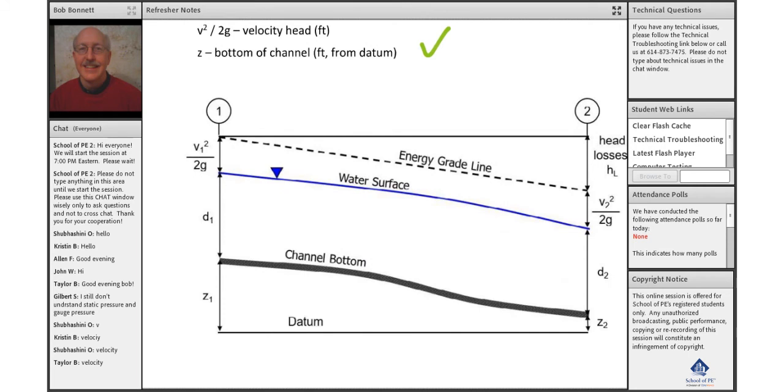If we take a look at this figure, we have our z value. Next would be the d, depth of flow.